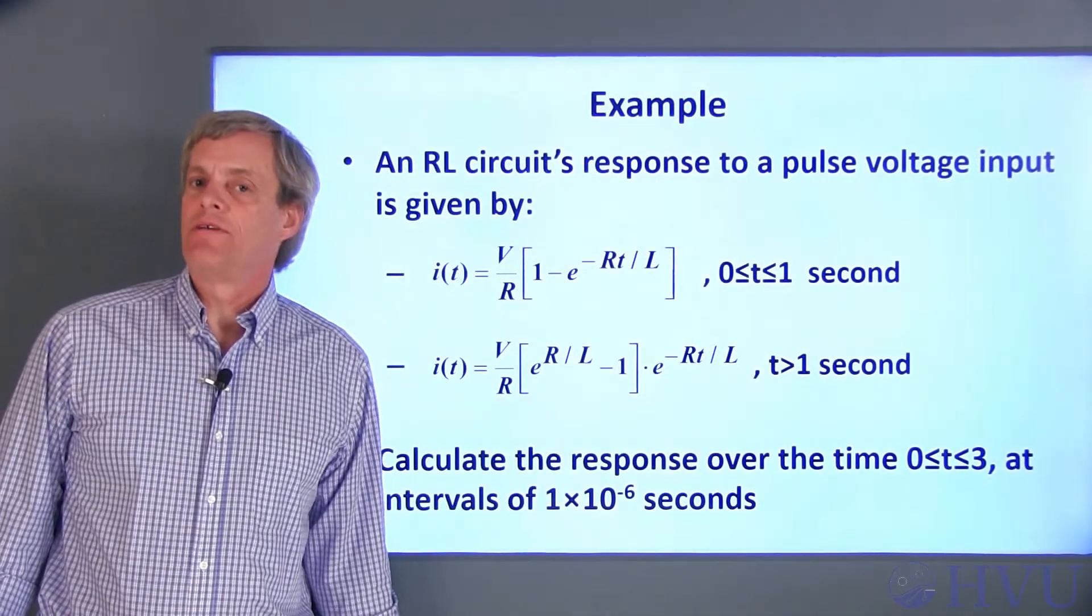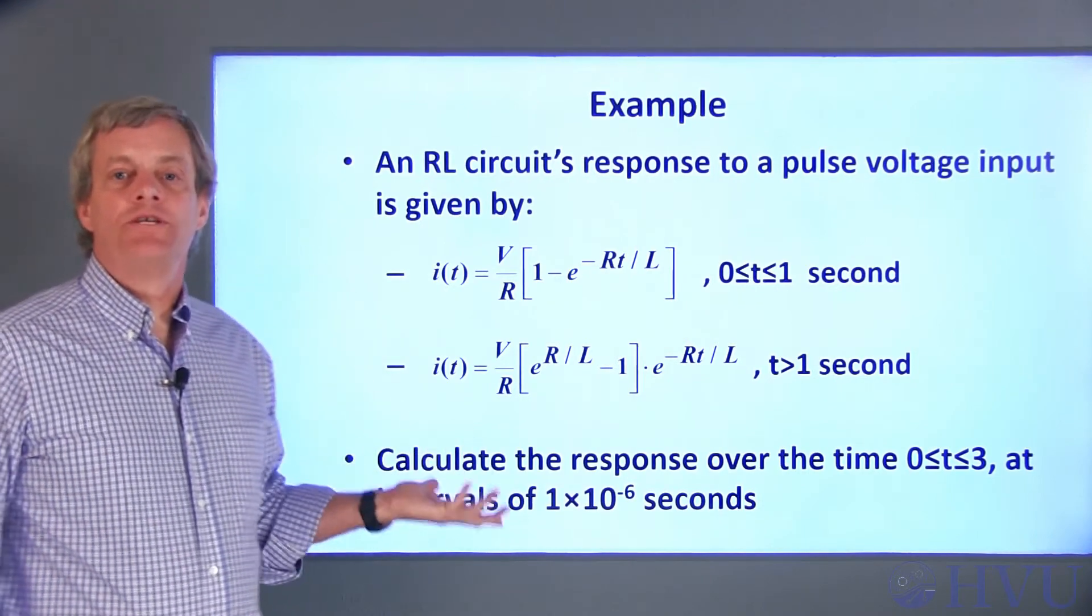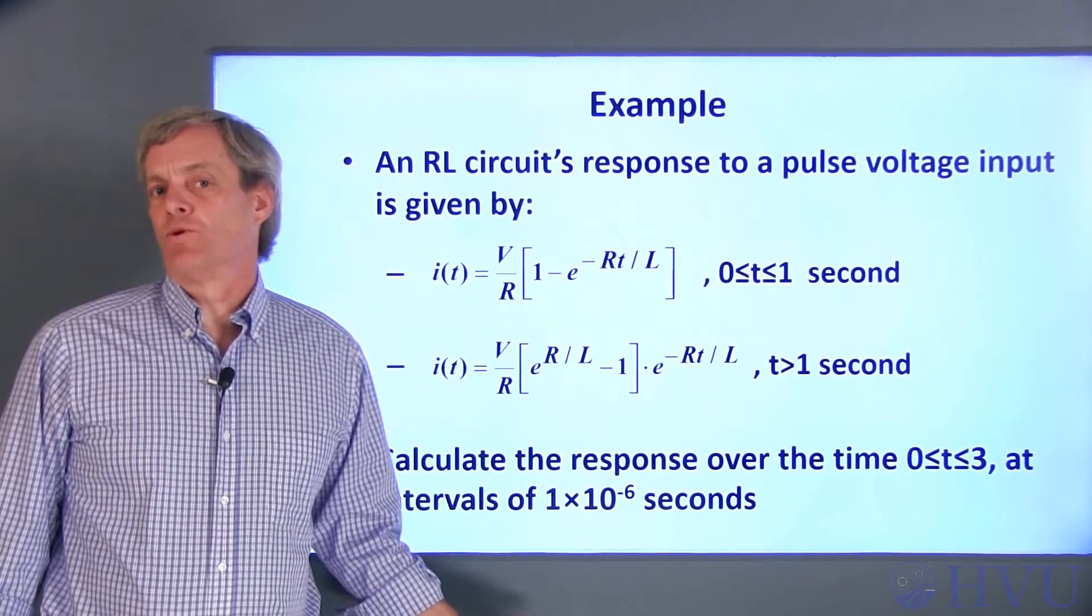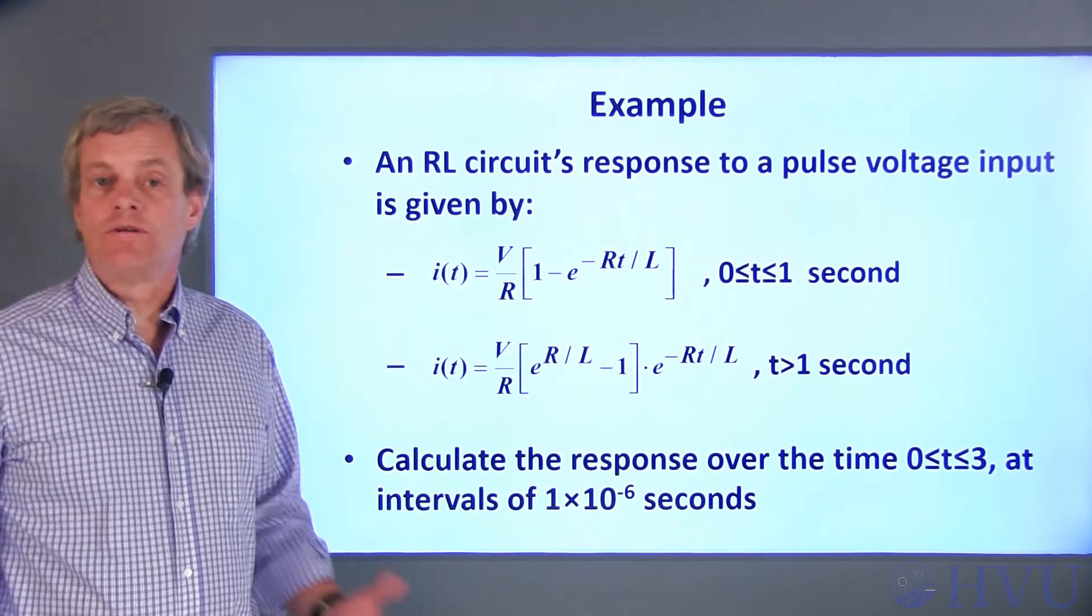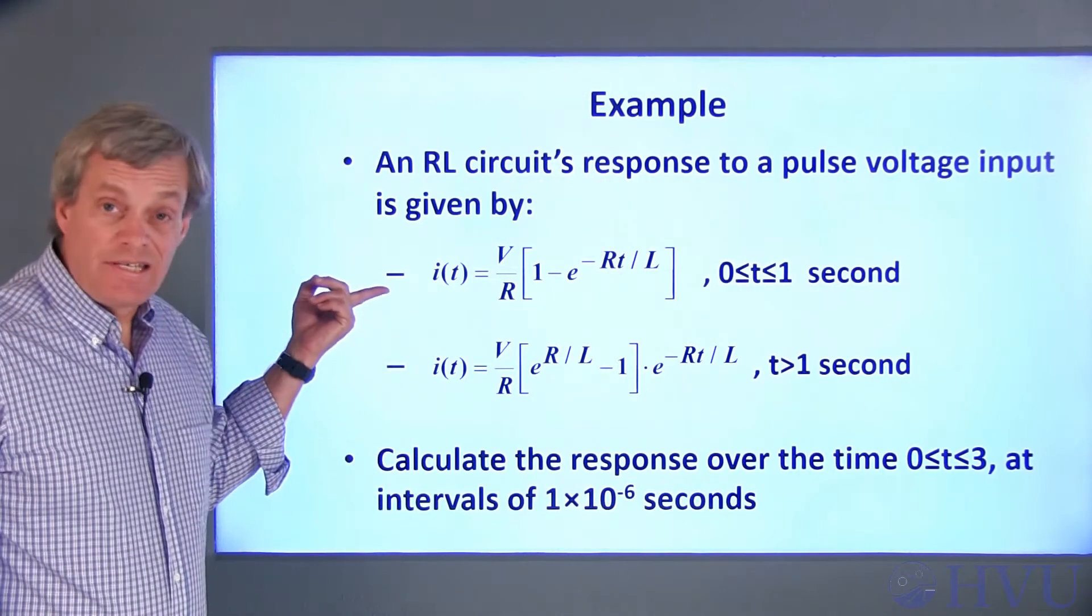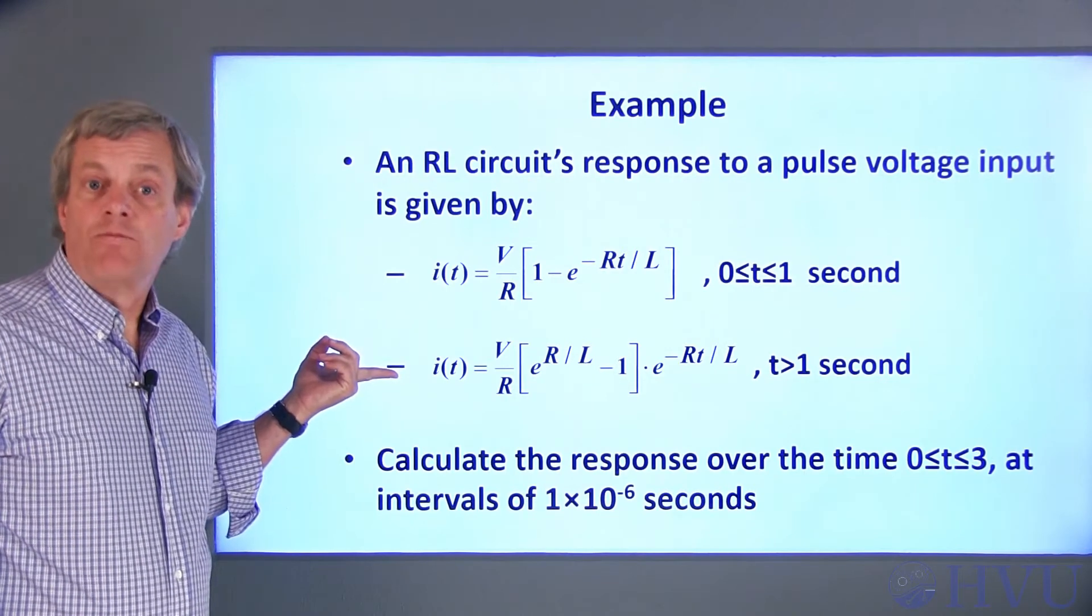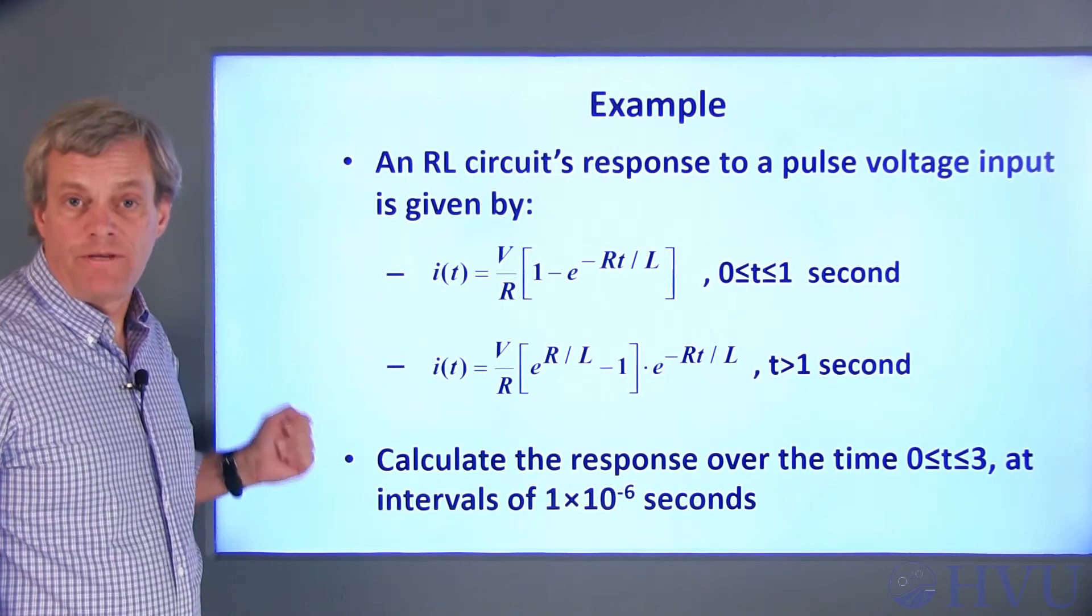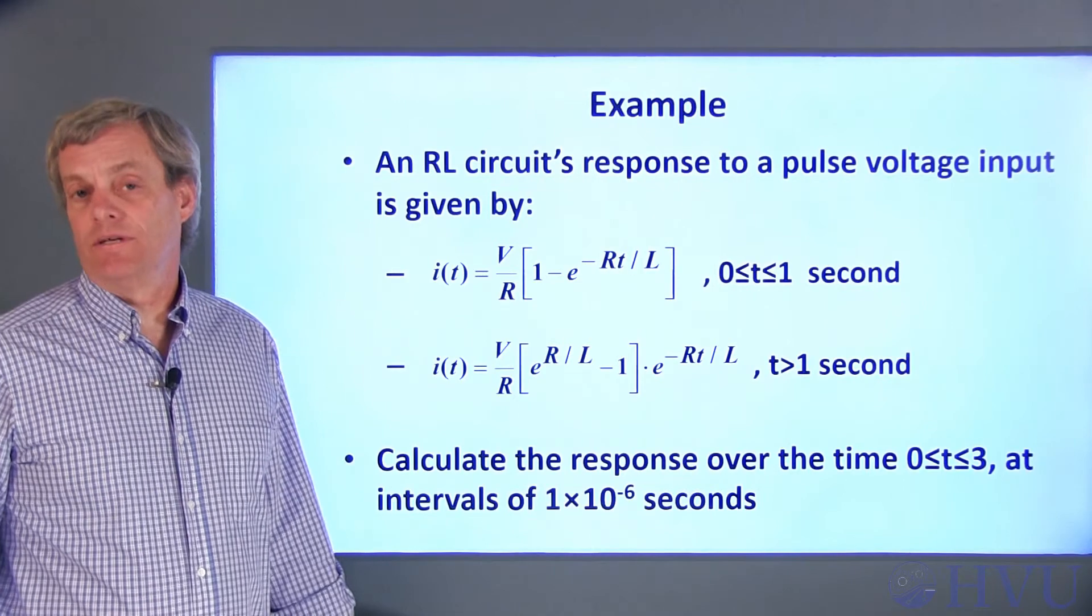Now I'll show how these approaches look in MATLAB. Here are the equations I'm going to implement. These equations govern the current in an inductor that is subject to a voltage pulse. The details probably aren't important for this application, but the problem is the same as exercise 6.2. You can look that exercise over if you want some context for the problem. Anyway, the current is given by this equation for time from 0 to 1 second, and by this equation from 1 to 3 seconds. I want to calculate the current for time between 0 and 3 seconds at time intervals of 1 microsecond. I'm going to end up calculating 3 million values for current.